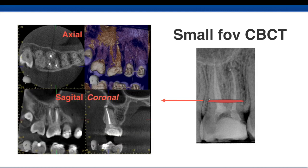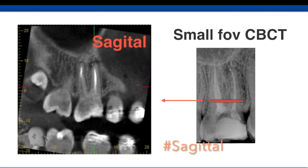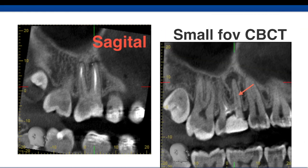Now looking at the sagittal view, I can see the MB1 which is obturated, along with some sealer extrusion. In another section of the same sagittal view, the MB2 canal is visible — look at the size of that lesion compared to the first section. This more palatal section clearly shows a large lesion at the apex. These points are more than sufficient for me to confirm there is an MB2 that I need to find, shape, disinfect, and obturate.